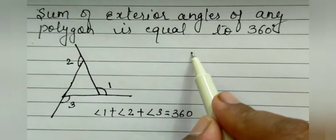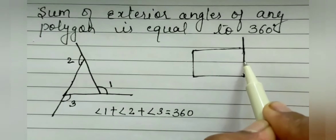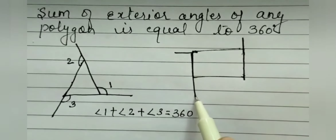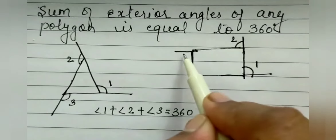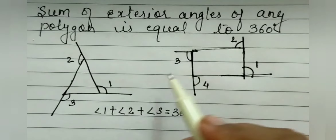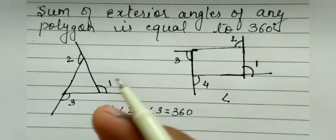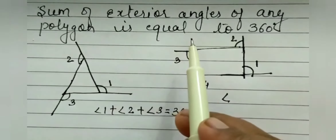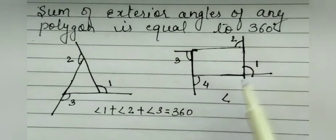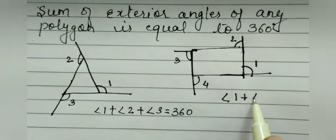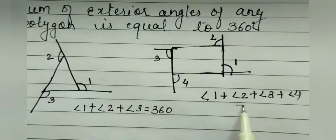Here I am making one quadrilateral and again extending the sides in the same order — one side, then another, then the third, and the fourth. Now we have four exterior angles: angle 1, angle 2, angle 3, and angle 4. This polygon could be a pentagon, hexagon, quadrilateral, or triangle — in all polygons, the sum of exterior angles equals 360 degrees. So for the quadrilateral: angle 1 plus angle 2 plus angle 3 plus angle 4 equals 360 degrees.